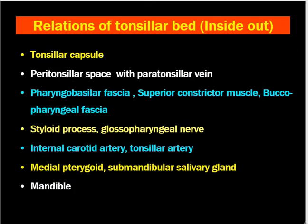The relations of the tonsillar bed from inside out are: the tonsillar capsule, the peritonsillar space with the paratonsillar vein — importantly, the paratonsillar vein is the most common vein that bleeds during tonsillectomy — then the pharyngeal vascular fascia, the superior constrictor muscle, and the buccopharyngeal fascia. The styloid process and the glossopharyngeal nerve are associated with the lateral aspect of the tonsil. Occasionally, the internal carotid artery and tonsillar artery may form aneurysms, causing enlargement and pulsation of the tonsils — we must be careful when we see pulsatile tonsils.